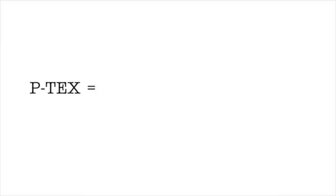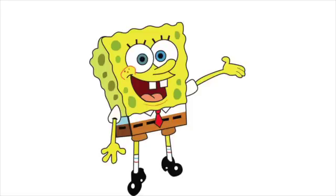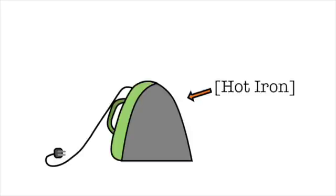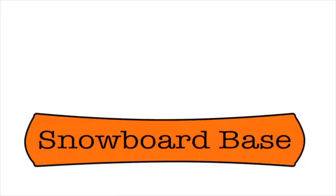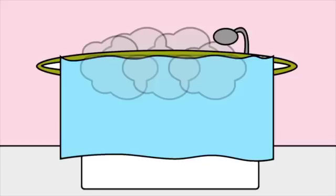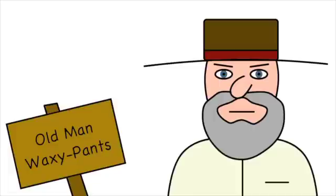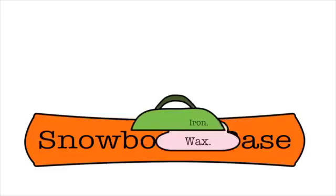The other thing about P-TEX is it's porous, like a sponge. And like a sponge, it can soak stuff up. It just takes a little heat to do it. When you bust out your waxing iron and rub it around the base of the ski or snowboard, you're opening up the pores of the board, kind of like how a hot shower opens up the pores on your face before you wash it.